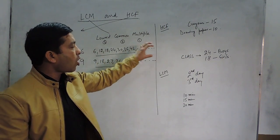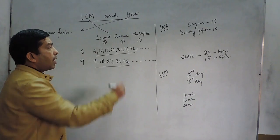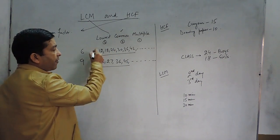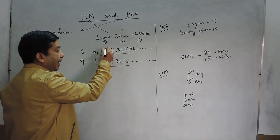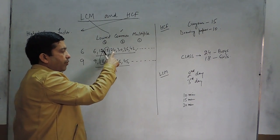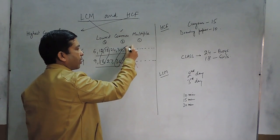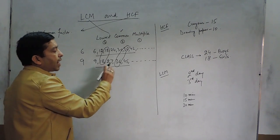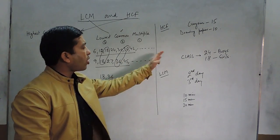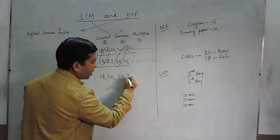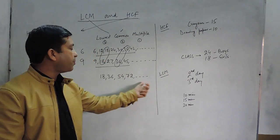We should understand and visualize what are the multiples of 6 and what are the multiples of 9. The second thing is the common multiple. If we look at the common numbers: 6 is not common, 12 is not common, but 18 is common in both. 24 is not common, 30 is not common, 27 is not common. The next common number is 36. So the common numbers are 18, then 36, then 54, then 72 — essentially the table of 18 up to infinity is common.